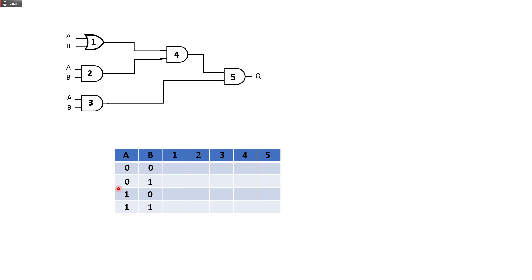We are going to process these inputs. Remember the OR gate truth table: 0 plus 0 is 0, 0 plus 1 is 1, 1 plus 0 is 1, 1 plus 1 is still 1. So 0 or 0 is 0, 0 or 1 — remember, for an OR gate, as long as there is a 1, the output is 1. So here there is still a 1, and here both are 1, so output is 1.